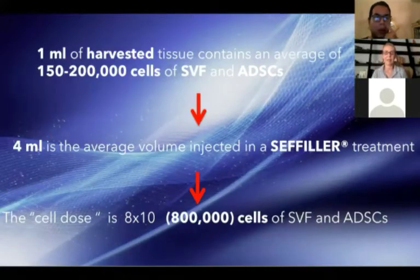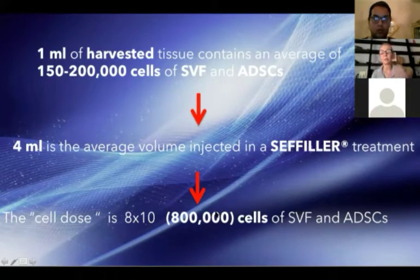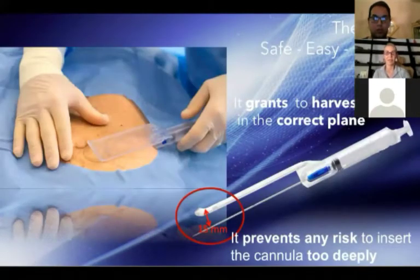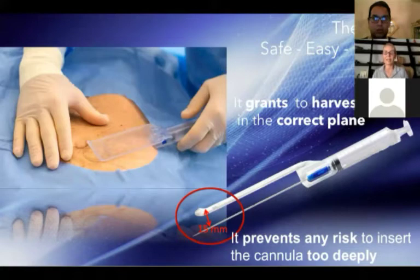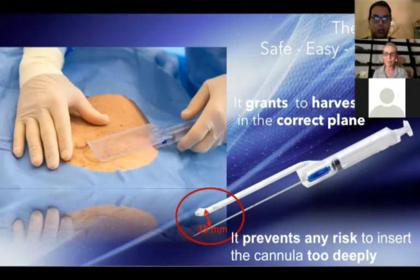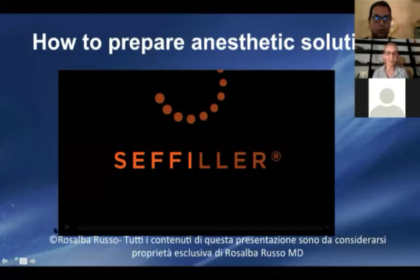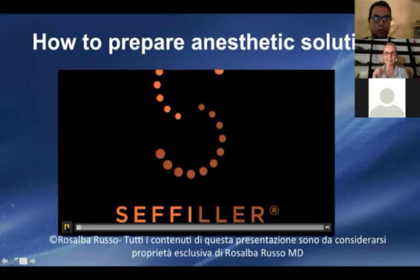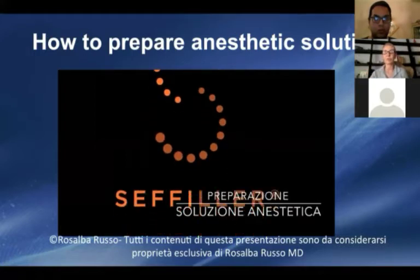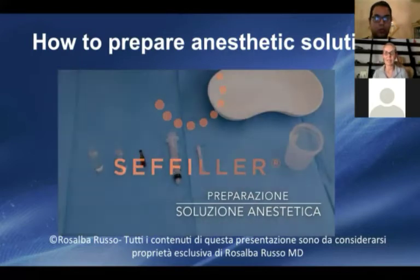In the 4 millimeter average volume treatment, the cell dose is 800,000 to 1 million stromal vascular fraction cells. The extraction of the stem cells from the abdomen is very safe, very easy, and effective. It permits us to remain in the correct plane and prevents any risk of inserting the cannula too deeply or too superficially.